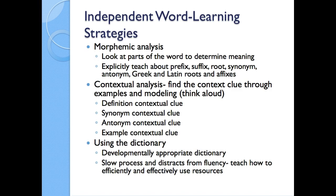For independent word learning strategies, three popular approaches are morphemic analysis — looking at parts of the word to determine meaning — which involves explicitly teaching prefixes, suffixes, roots, synonyms, antonyms, and Greek and Latin roots and affixes. Another approach is contextual analysis — finding context clues through examples and modeling. This involves thinking aloud about definition context clues, synonym context clues, antonym context clues, and example context clues. You might say to students: 'There's a synonym clue in this paragraph that will help you figure out the meaning of the word clergy,' and model how you would go about finding those clues.